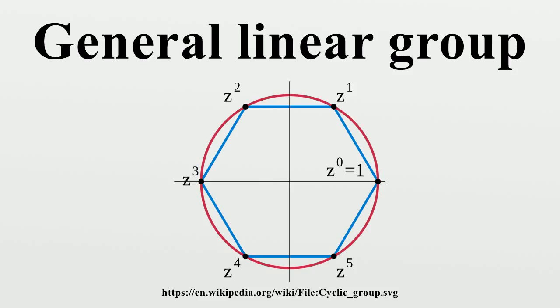Complex case: The general linear group over the field of complex numbers, GL(n,C), is a complex Lie group of complex dimension n². As a real Lie group it has dimension 2n².